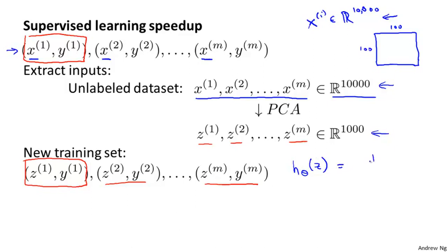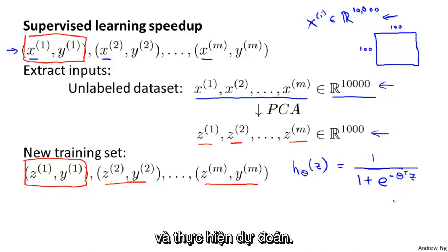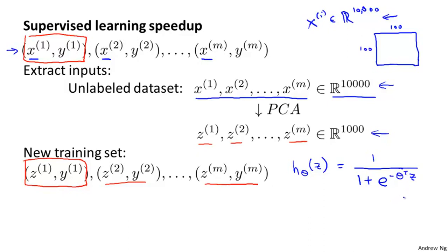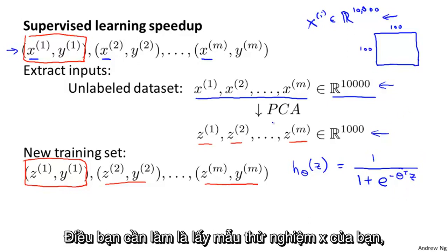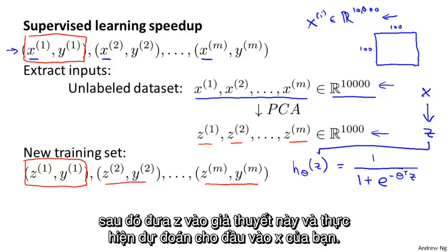If we were using logistic regression, for example, we would train a hypothesis that outputs 1 over 1 plus e to the negative theta-transpose z, taking one of these z vectors as input and making a prediction. Finally, if you have a new test example x, you take it and map it through the same mapping found by PCA to get the corresponding z, which then gets fed to the hypothesis to make a prediction.